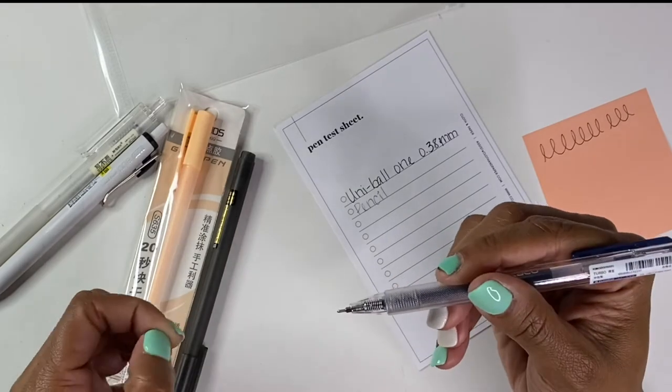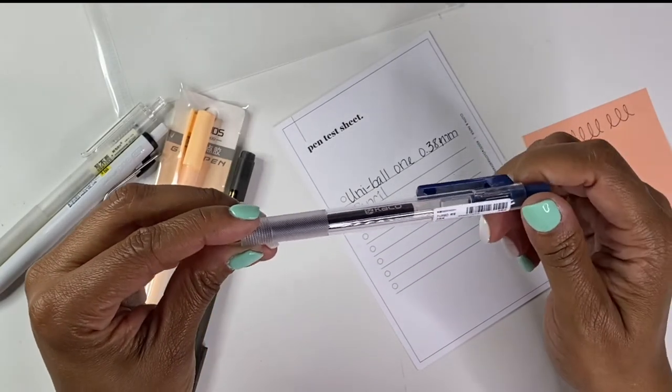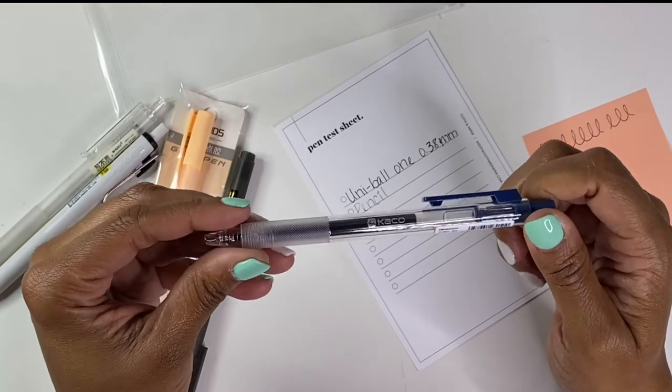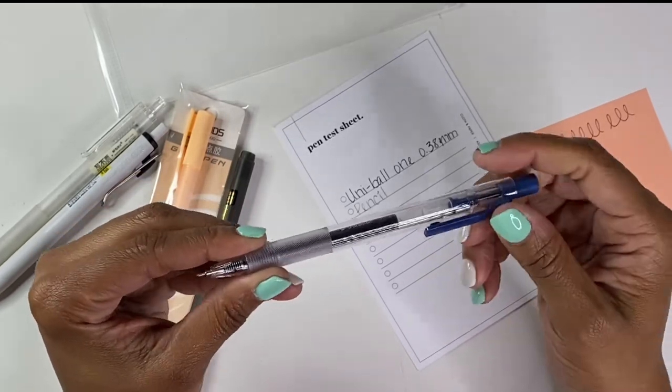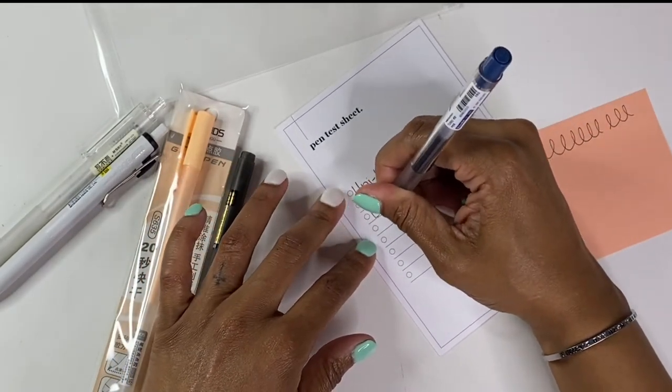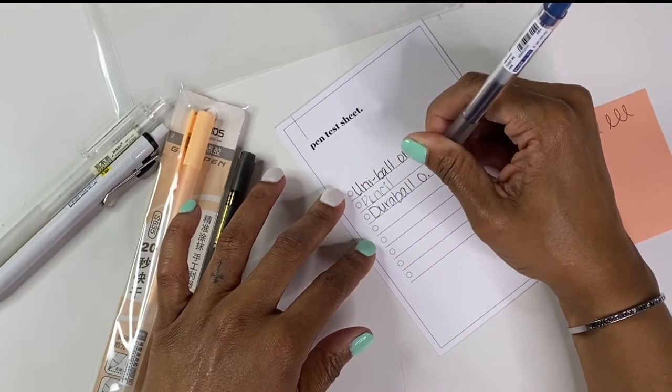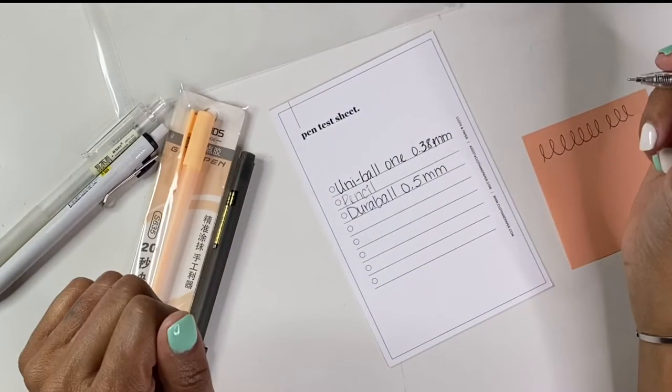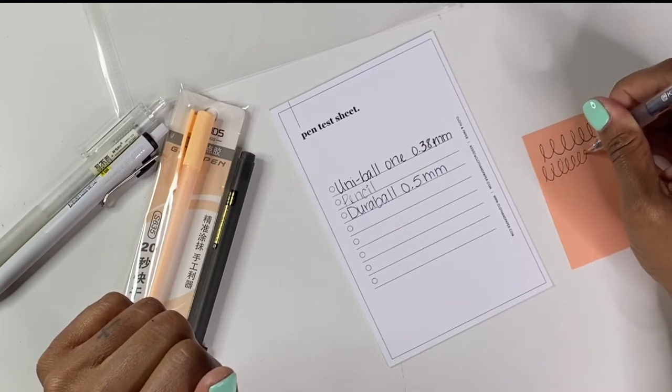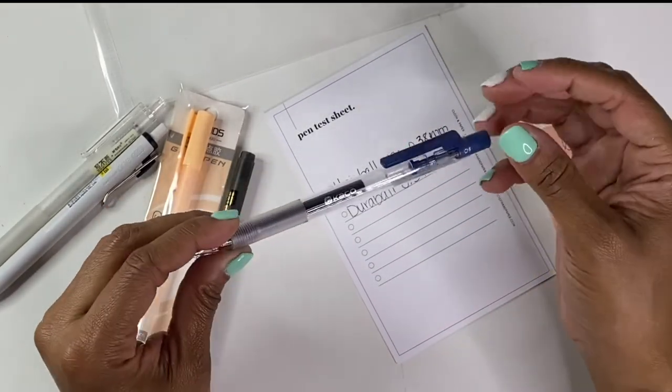So here's another one. This is a Durable 0.5 millimeter, and I'm assuming the ink is blue. Yes, oh that's a pretty blue too. I really like the blue. I feel like this one writes better than the Uniball One. It has less of a skip to it, so I really enjoy that.